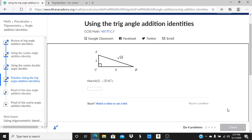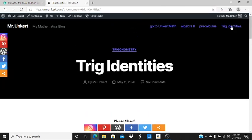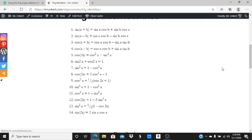So to figure out which identity I'm going to use, I'm going to go to MrUnkert.com and I'm going to go up to the menu and click Trig Identities. And then I come to this page, and this is a work in progress, so I'm continuing to add as I go. It's not an all exhaustive list.